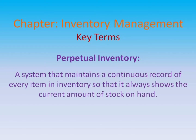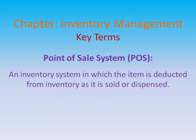Perpetual inventory: a system that maintains a continuous record of every item in inventory, so that it always shows the current amount of stock on hand. Point of sale system, or POS: an inventory system in which the item is deducted from inventory as it is sold or dispensed.